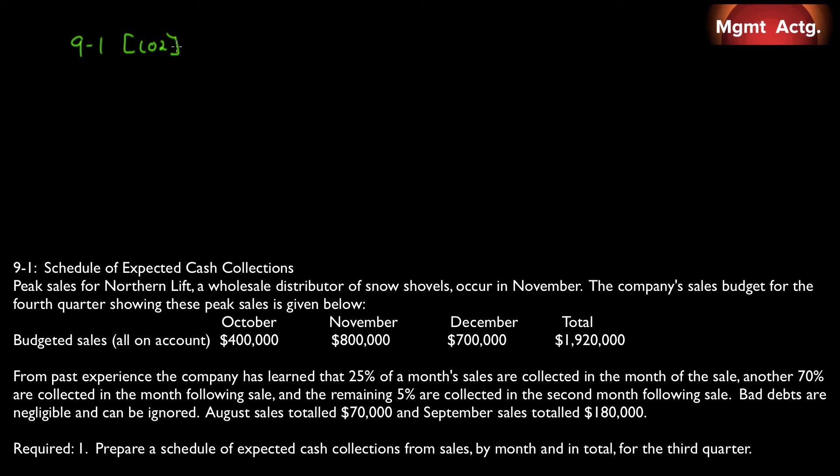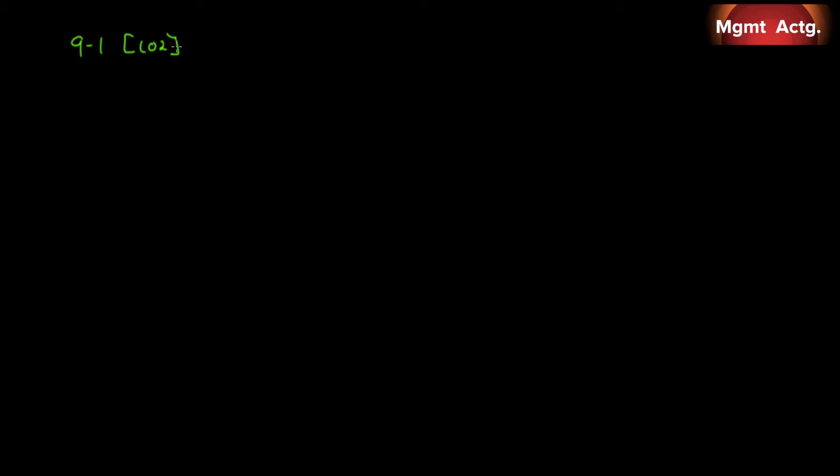We're being given sales for August and sales for September — September sales total $180,000. We're asked to prepare a schedule of expected cash collections from sales by month and in total for the third quarter. So we have sales for August and September. Let's go through it nice and slow and see what we have.